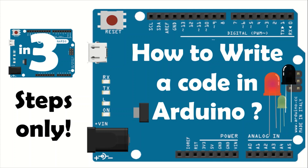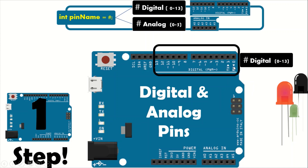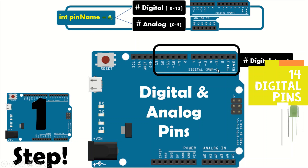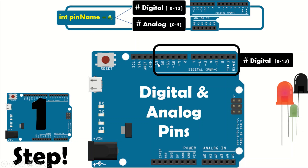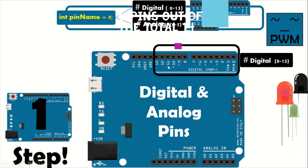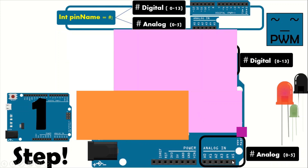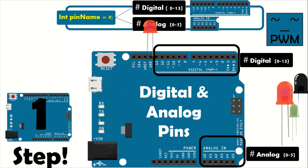I'll explain how to write a code in Arduino in only three steps, so by the end of this video you will be able to write any code in just three steps. As a quick revision: there are 14 digital pins starting from 0 to 13, and you have to take note of the PWM pins — those pins marked with a tilde symbol. There are also six analog pins from A0 to A5.